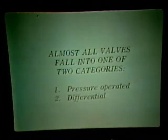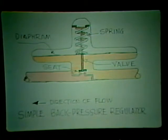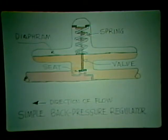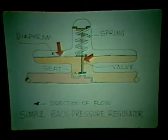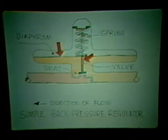Almost all valves fall into one of two categories: they're either pressure operated or differential valves. A simple back pressure regulator has a spring forcing the valve closed against the seat. The upstream or casing pressure pushes against the underside of the diaphragm trying to compress the spring and push the valve open, while the downstream or tubing pressure pushes against the bottom of the valve. Because the diaphragm is much larger than the stem, most of the opening effect is caused by the upstream pressure, and only a minor part by the downstream pressure.